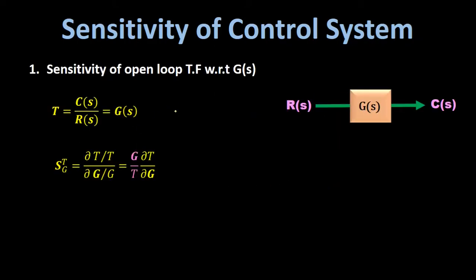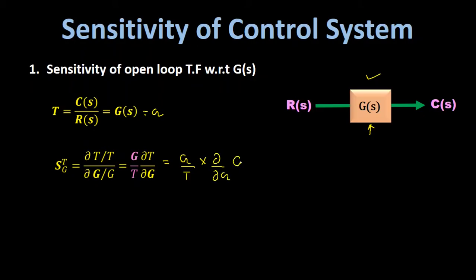For the open loop control system, the overall transfer function is T = G(s), so C(s)/R(s) = G(s). According to the definition of sensitivity, S_TG equals (ΔT/T) divided by (ΔG/G), which equals (G/T)·(∂T/∂G). Substituting T = G, we differentiate G with respect to G to get 1. So sensitivity equals (G/G)·1.